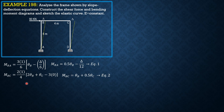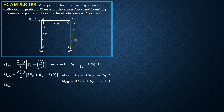Likewise, MCB is obtained by interchanging coefficients: MCB equals 0.5 theta_B plus theta_C — that is equation 3. Then for MCD, the far end D is a pin so we use 3EI over L. Delta is treated as positive because the chord rotation for both columns is clockwise. So MCD equals 3 times (1 over 6) times (theta_C minus delta over 6), which simplifies to 0.5 theta_C minus delta over 12. Call that equation 4.